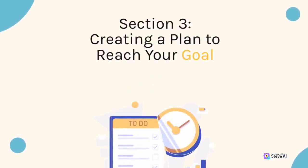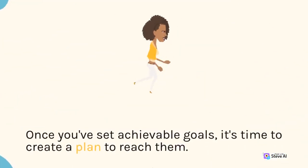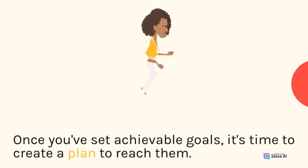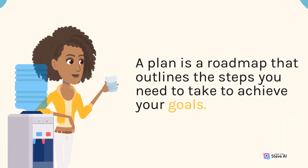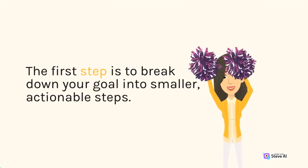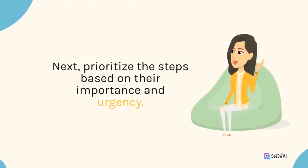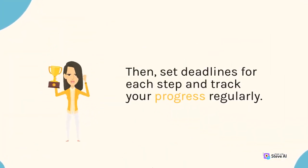Section 3: Creating a Plan to Reach Your Goals. Once you've set achievable goals, it's time to create a plan to reach them. A plan is a roadmap that outlines the steps you need to take to achieve your goals. The first step is to break down your goal into smaller, actionable steps. Next, prioritize the steps based on their importance and urgency. Then, set deadlines for each step and track your progress regularly.